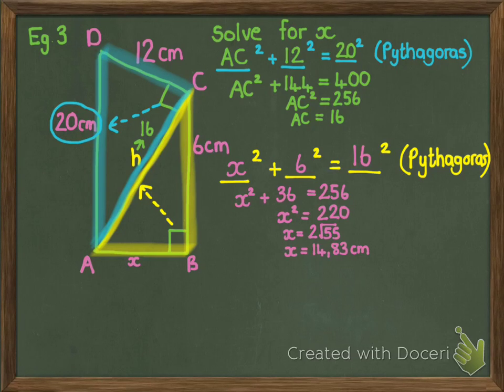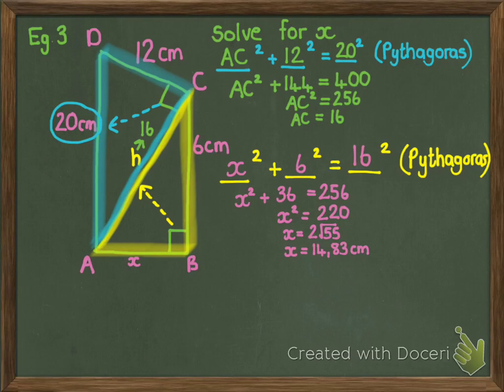And that's Pythagoras' Theorem. We just have to remember it must be in a right-angled triangle, and you must always identify your hypotenuse and put it in the right place.